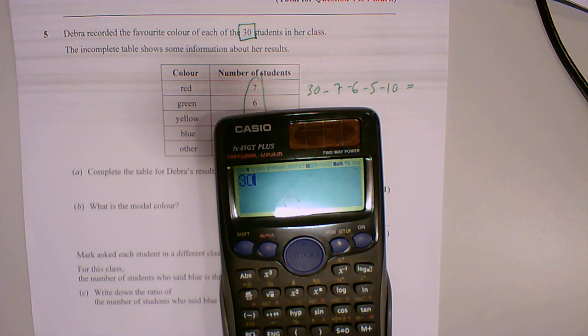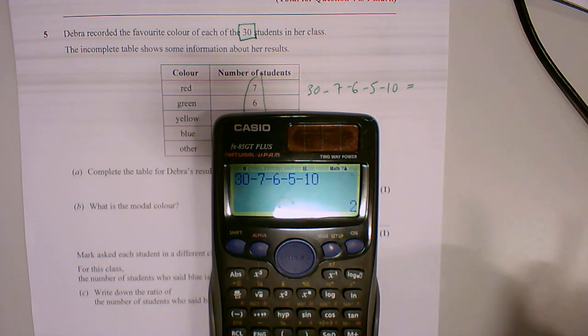30, take away 7, take away 6, take away 5, take away 10. Gives us 2.